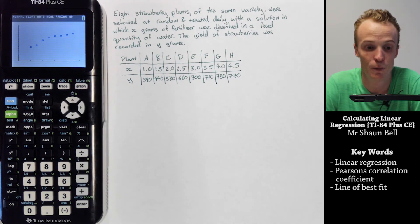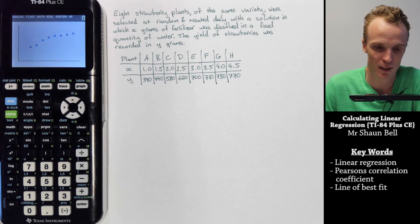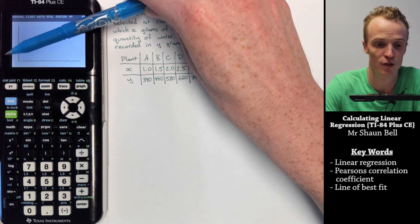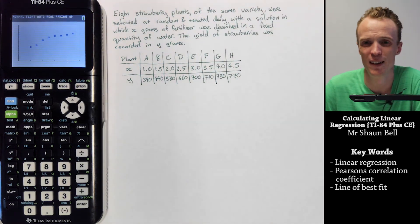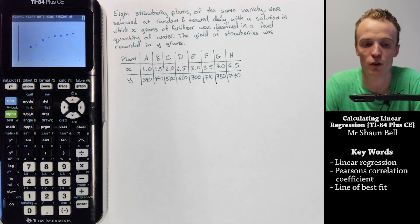Now that we can see the graph, we can see that we've got a relatively straight line relationship. It's not perfectly linear, but we're going to assume that it is for the purpose of this video. And we now are going to look at how we find the linear regression equation using this calculator.